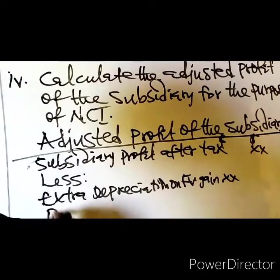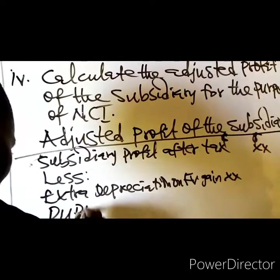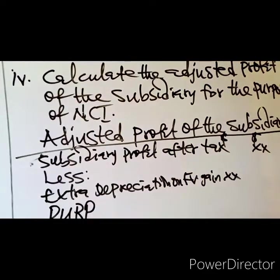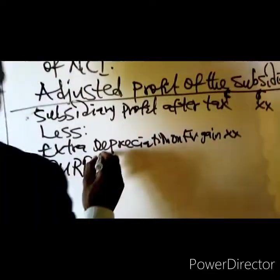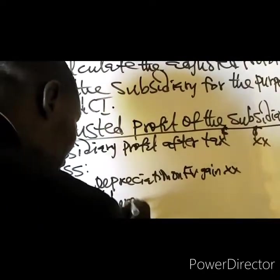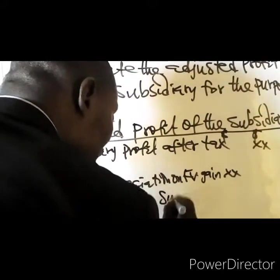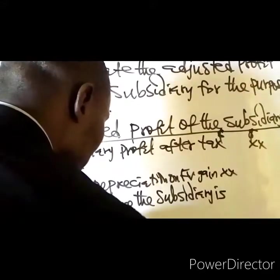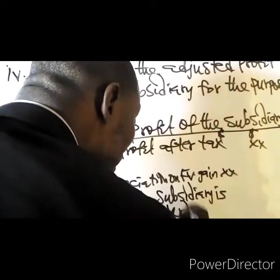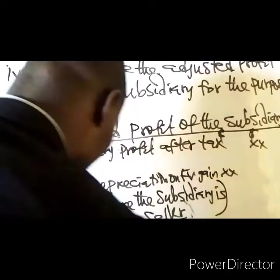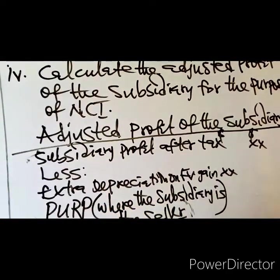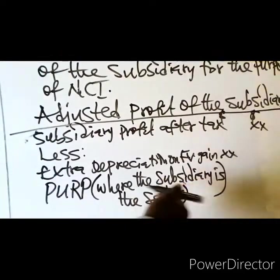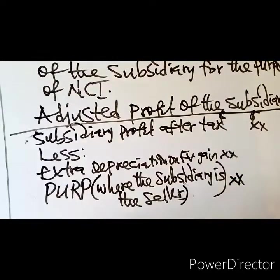Number two: provision for unrealized profit, where the subsidiary is the seller. If the parent company is the seller, you don't need this. You only need it where the subsidiary company is the one that sells to the parent.